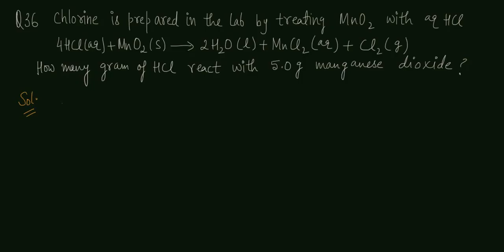The first thing you have to ensure is that the equation is balanced. The equation is balanced, and you can verify it. Then you can relate HCl and MnO2. So the balanced equation gives us: mol HCl divided by 4 equals mol of MnO2.